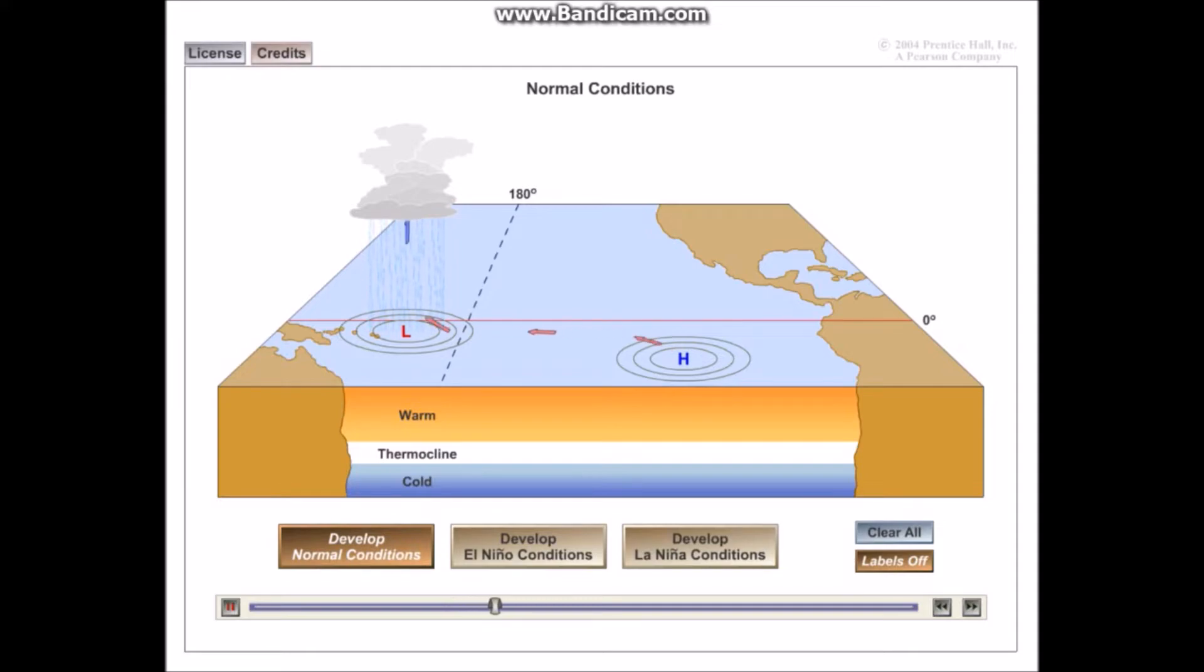And as the cell completes and it moves around, the cooler air over the coast of South America sinks. And this causes this circular movement of air which we call the Walker Cell. It is this cell that generates the normal weather and oceanic conditions that we have in the Pacific region.